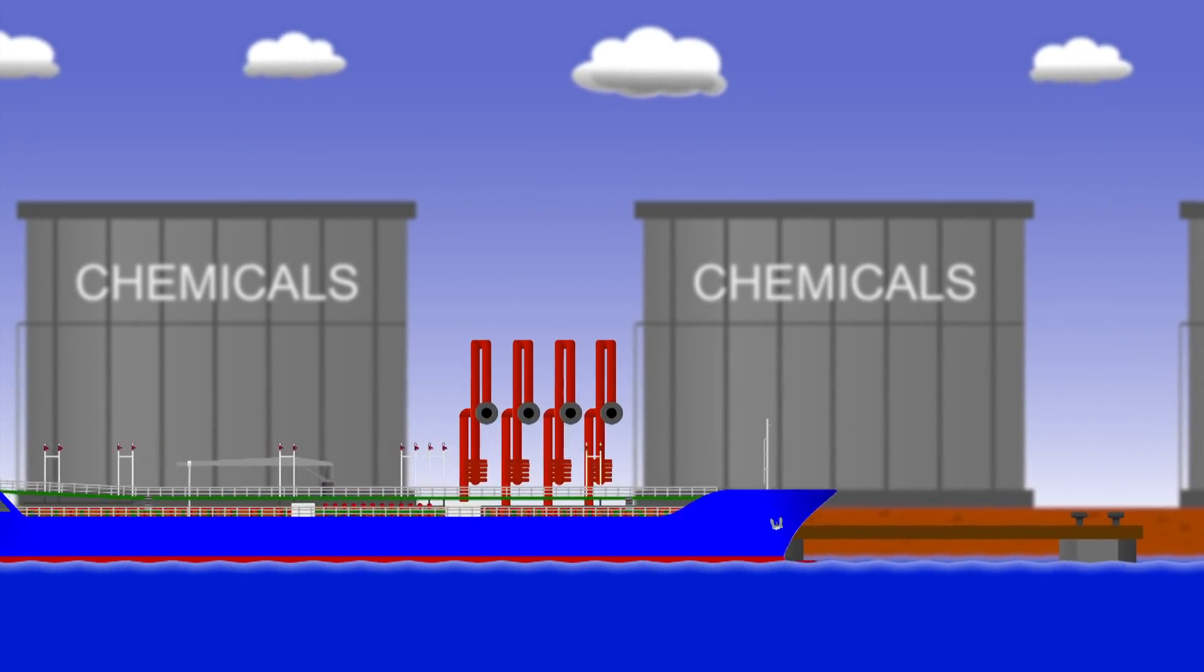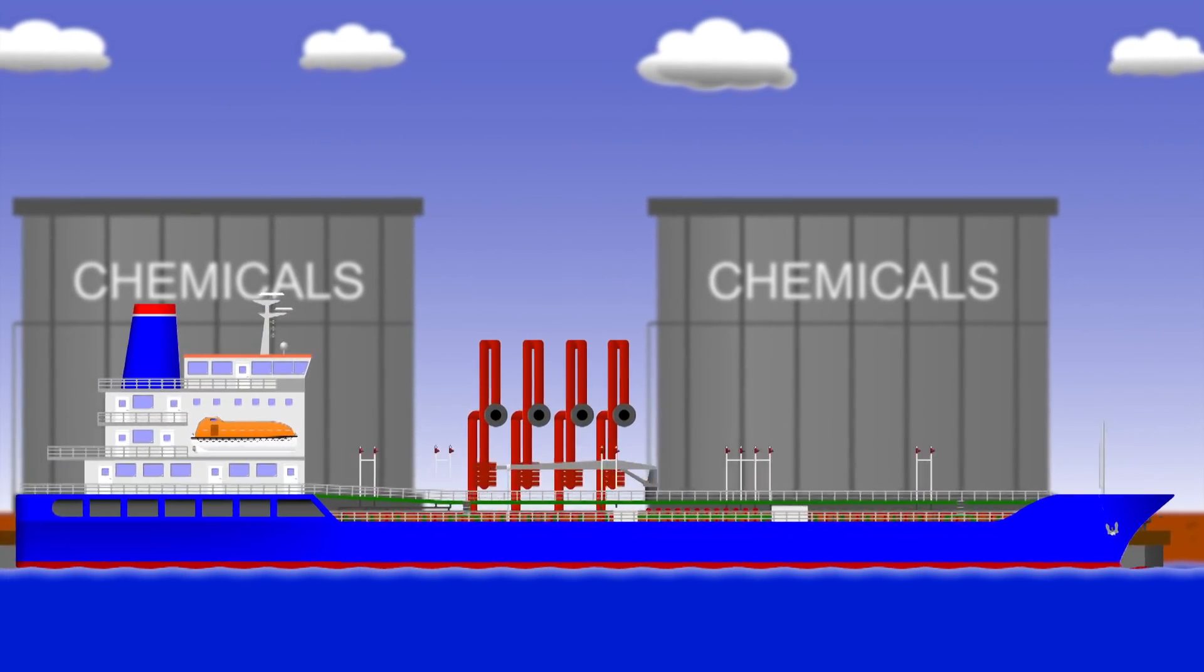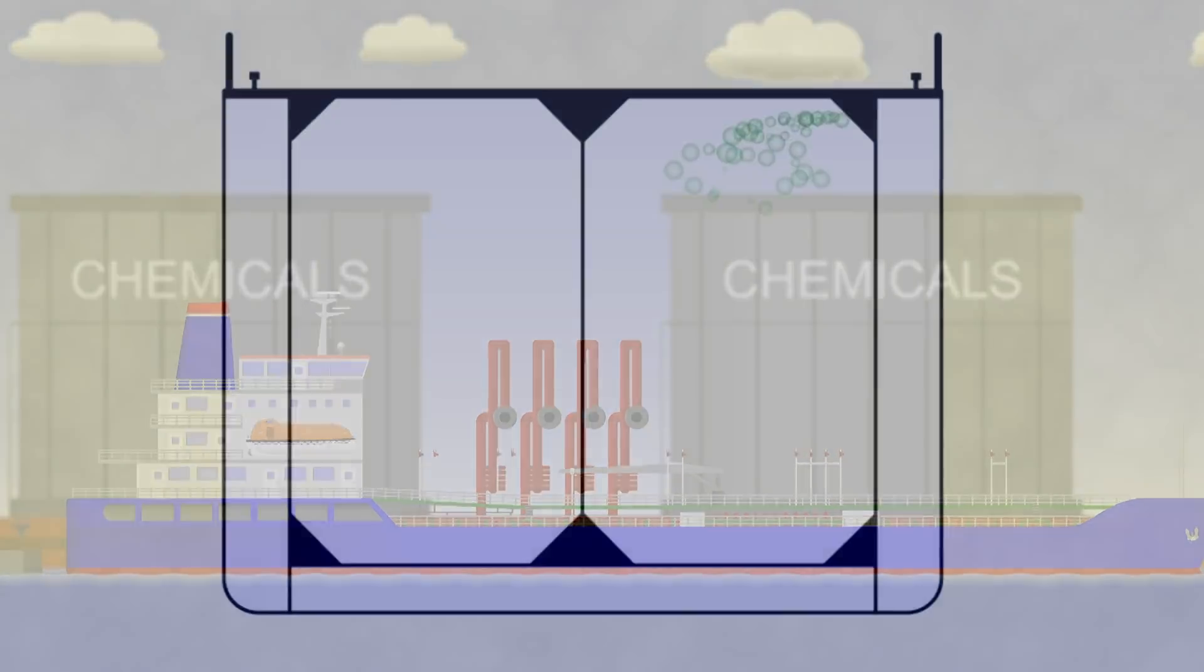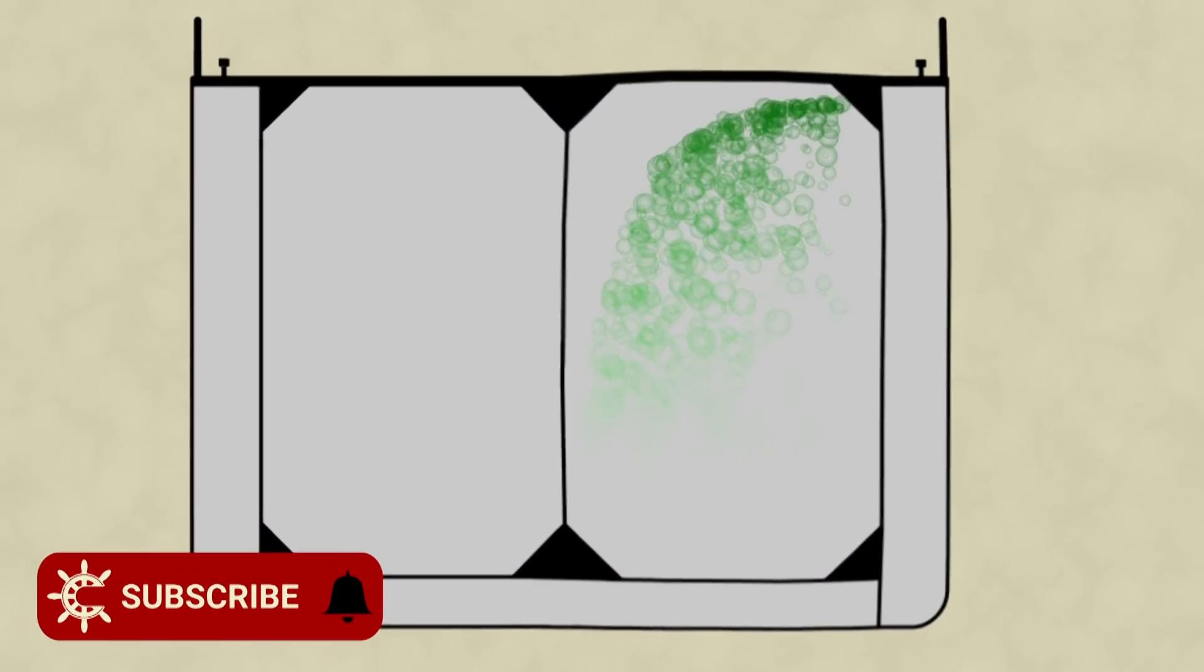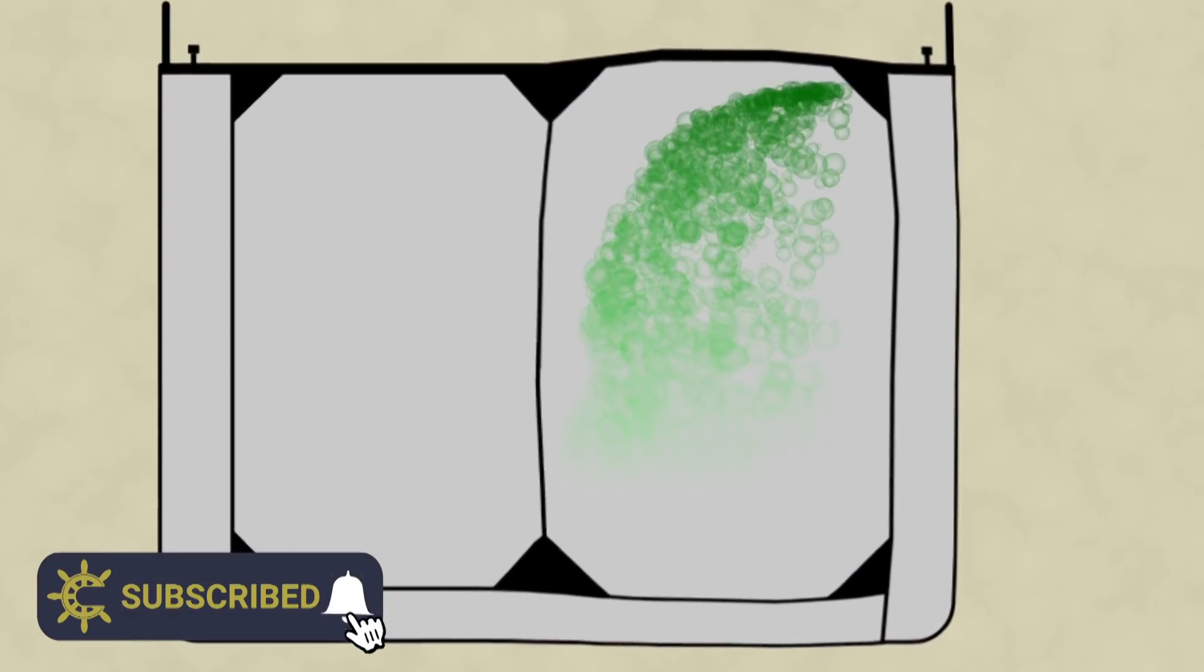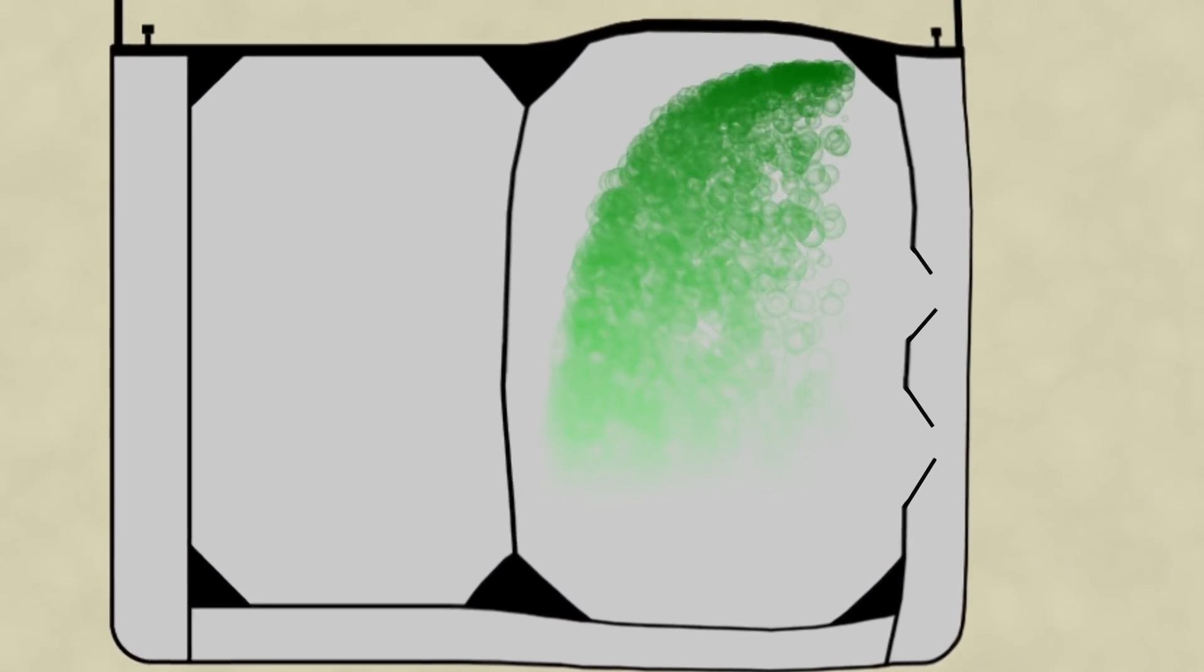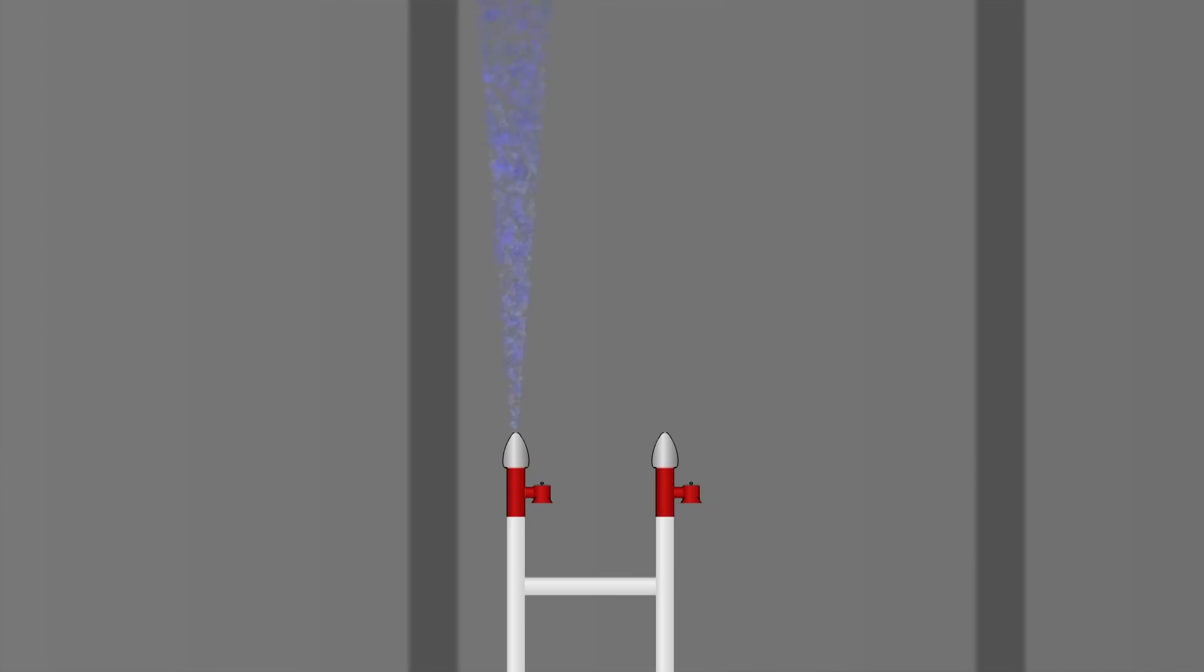In 2019, the chemical tanker Fair Chem Philly was discharging cargo at Deer Park in Texas. Due to an imbalance in pressure, the vessel's cargo tanks swelled up, a bit like a balloon, until they just couldn't cope anymore and they literally burst. The PV valves that would normally deal with this sort of thing were simply overwhelmed.